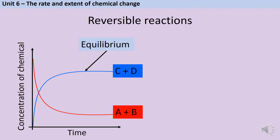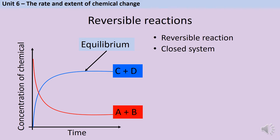When we're observing a chemical reaction that is a reversible reaction, if that reaction takes place in a closed system — in other words, no matter and no energy are added to the reaction or taken away — then it's possible for the reaction to reach a stage that we call equilibrium.